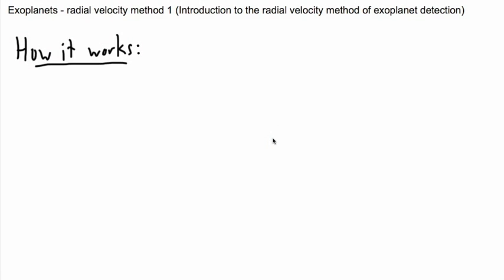In this next series of videos we're going to be looking in more detail about detecting planets around other stars using the radial velocity method. I'm going to start off by introducing how it works and after that we're going to go into some other videos about the details and some of the math behind it. I think it's a really good one — we can actually use our basic laws of physics to infer the existence of planets.